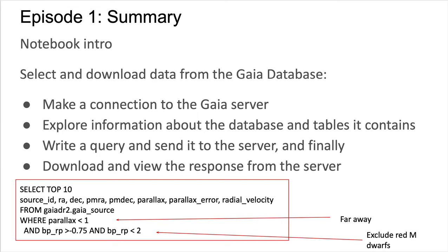At the bottom of this slide is the final command that is run. Here, we are selecting ID, RA and DEC, proper motion in RA and DEC, parallax and error, and radial velocity from the Gaia source table in the Gaia DR2 database. We add the additional restrictions that the parallax should be less than 1, meaning the star should be relatively far away, and that the BP-RP color should be between negative 0.75 and 2 to exclude foreground stars and red MDwarfs.